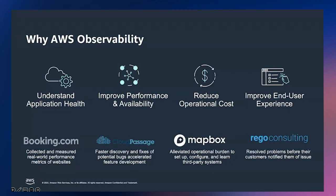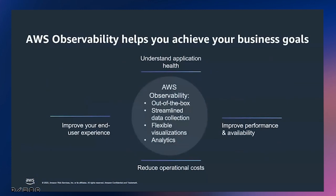Here's an example of a customer using our services — Booking.com, which many of you may use. They are using AWS Observability Services to collect and measure real-world performance metrics of their websites to ensure their customer experience is meeting their SLOs. Our goal is to ensure customers have a great observability experience no matter what service they use, whether AWS Observability Services or one of our partner services. AWS Observability is end-to-end, with capabilities from out-of-the-box observability to cross-account observability, streamlined data collection, logging insights, and open source needs.